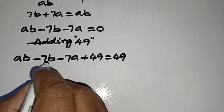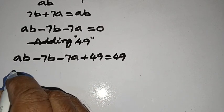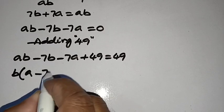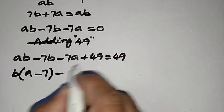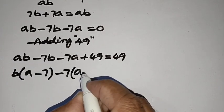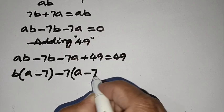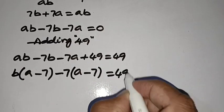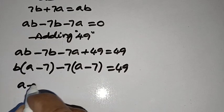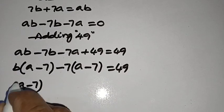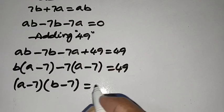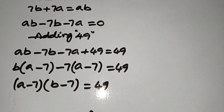Adding 49 on both sides, AB minus 7B minus 7A plus 49 is equal to 49. In the first two terms, B is common, so we can write B into A minus 7, and taking minus 7 common, we get A minus 7 into B minus 7 is equal to 49.